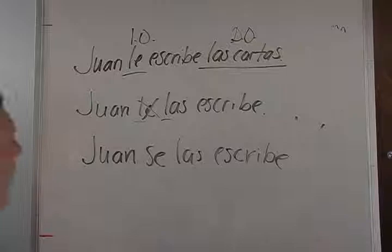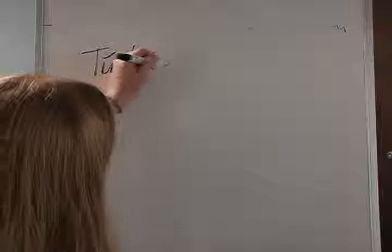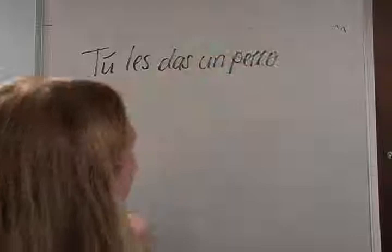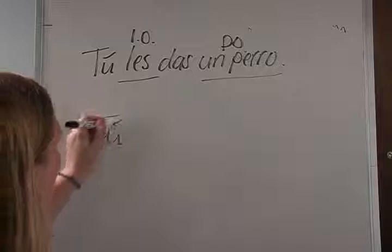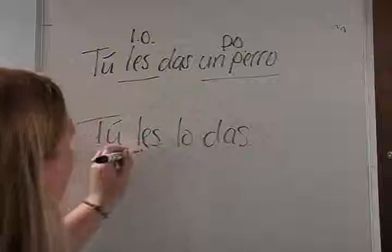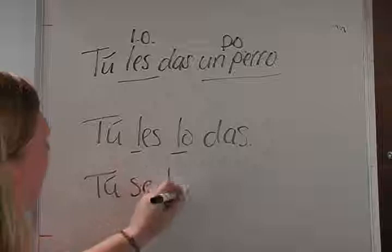Tú le das un perro. What do you give? Un perro is your direct. Who do you give it to? Le — which is your indirect. So if we rewrite this sentence, we would end up with tú le lo das. You can't have the two L's next to each other, so it becomes tú se lo das.